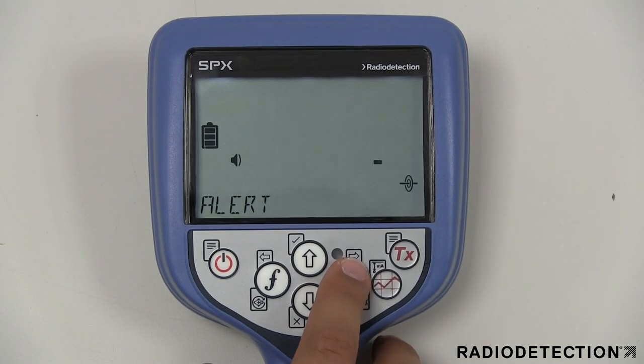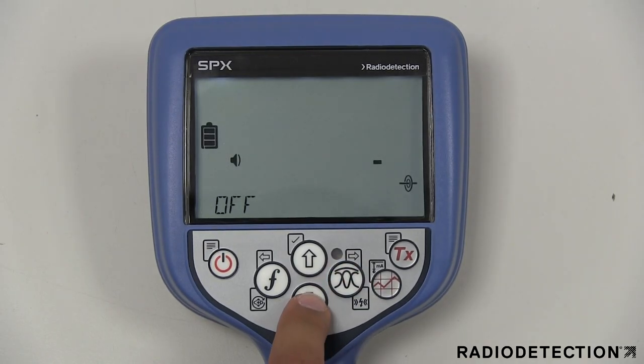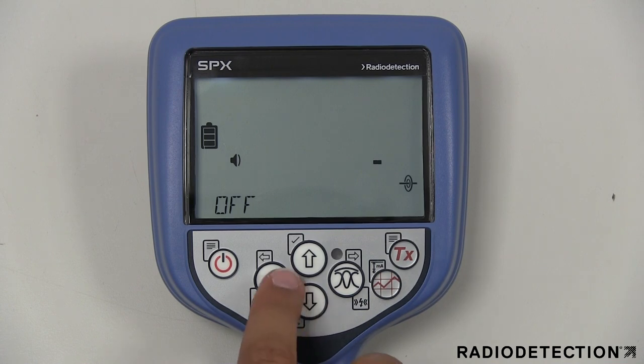The alert option allows you to enable or disable strike alert, which tells you when a shallow utility has been detected.